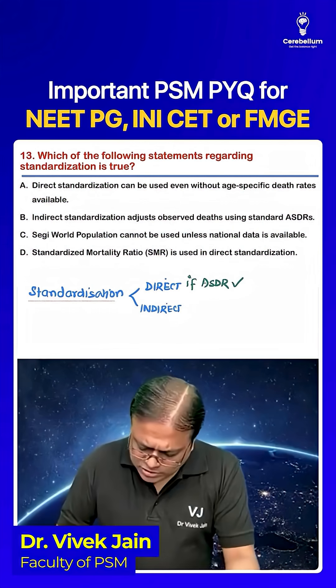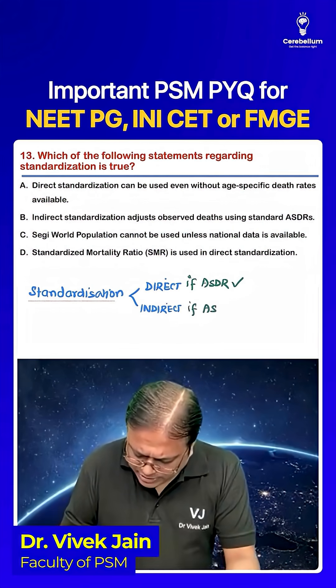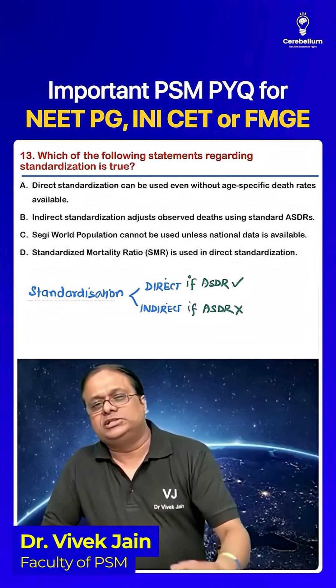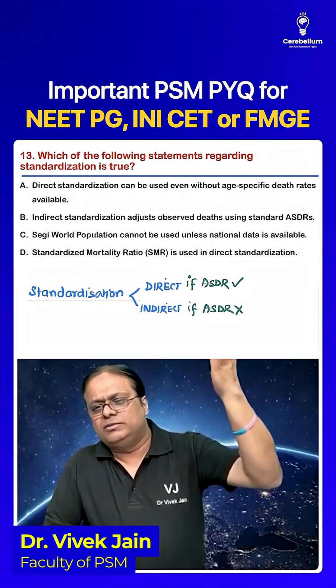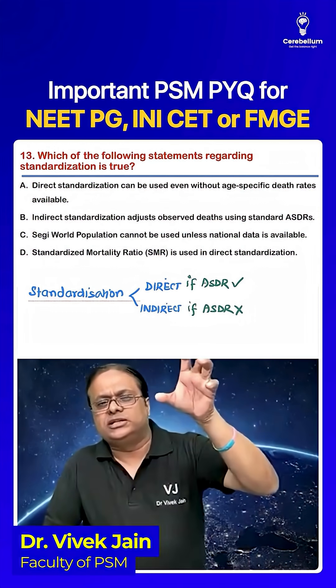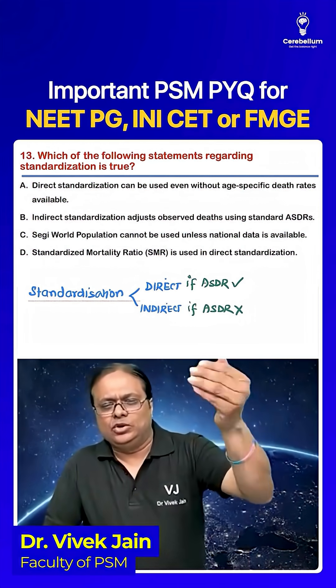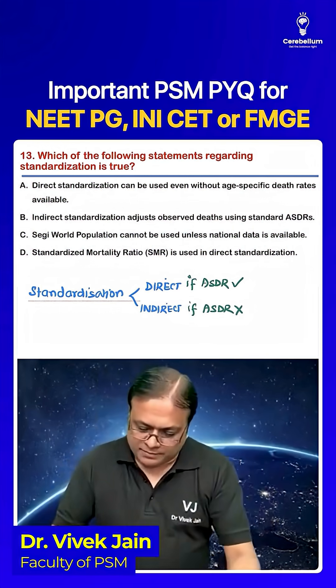Indirect standardization is used when age-specific death rates are not available for that population. Then we use world population — some standard populations — do reverse calculation and then apply.